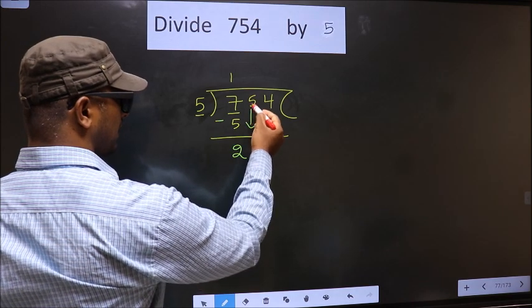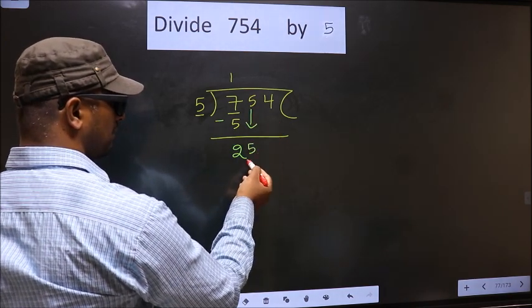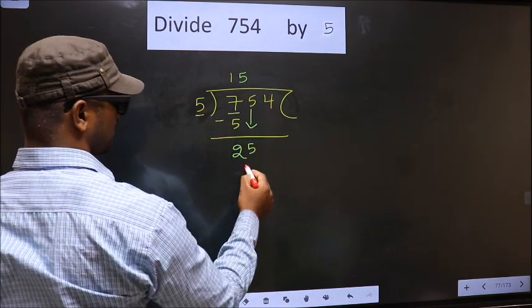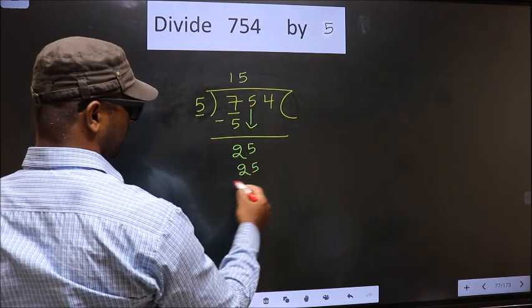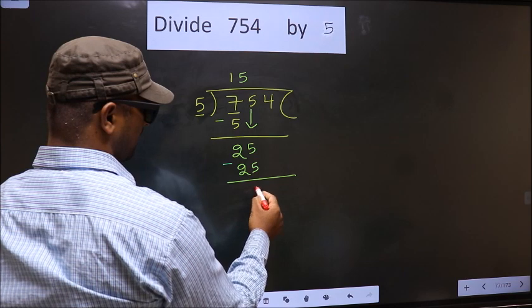Now you bring down the beside number. So 5 down. Now here we have 25. When do we get 25 in 5 table? 5 fives, 25. Now you subtract 25 minus 25, 0.